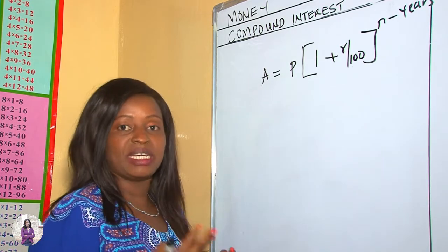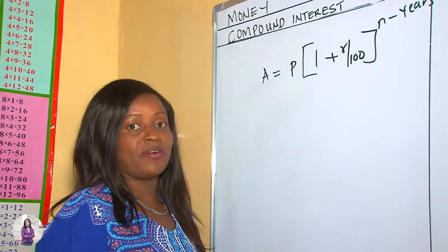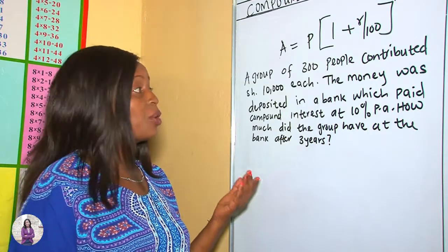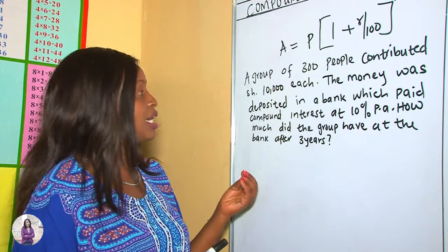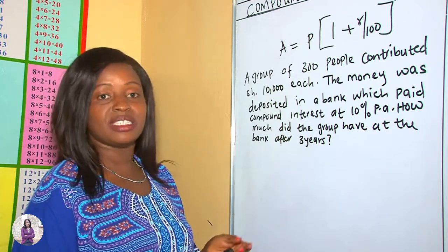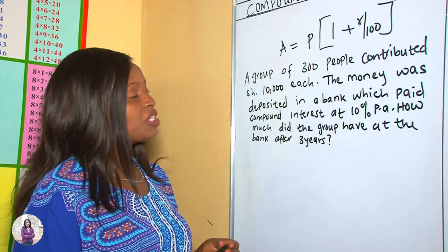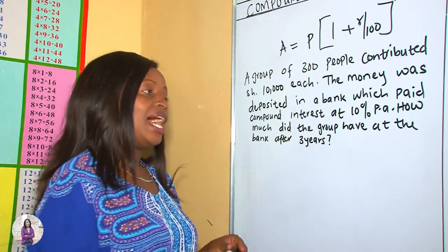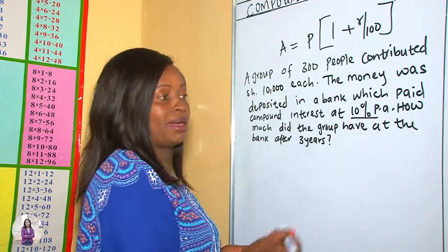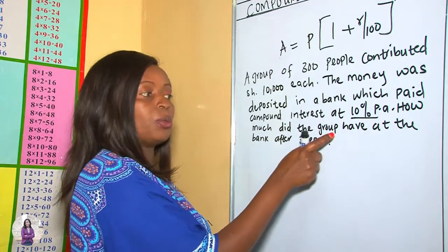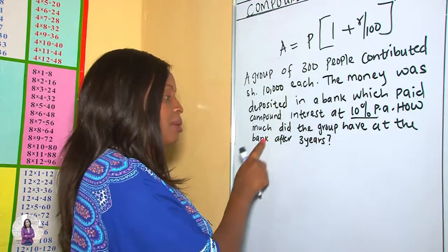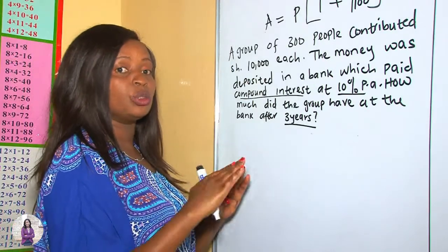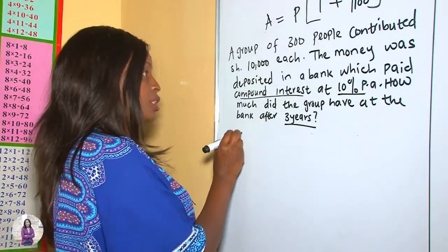Let's get started with our first example. A group of 300 people each contributed 10,000 shillings. The money was deposited in a bank which paid compound interest at a rate of 10% per annum. How much did the group have in the bank after three years? First, how much did they contribute in total?